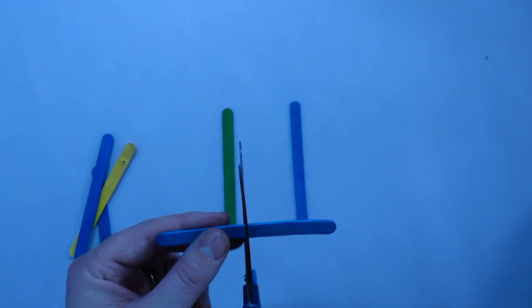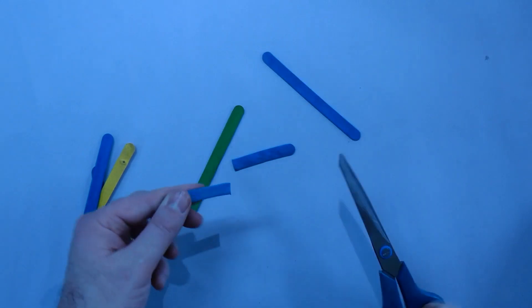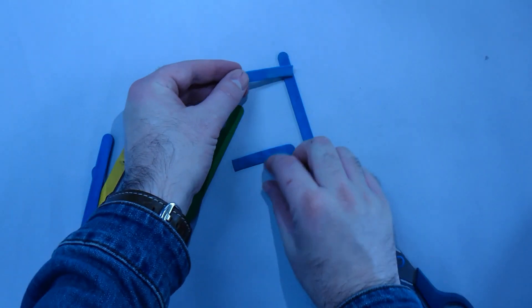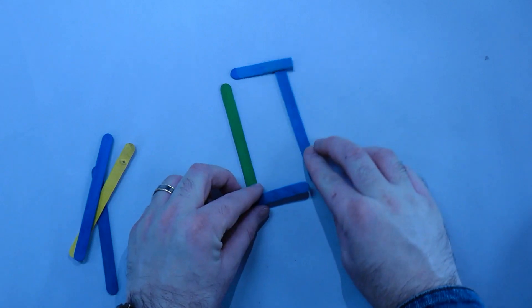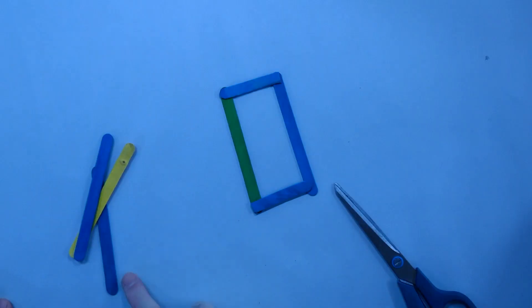What I'm going to do is make a rectangular body shape, so I'm going to cut one paddle pop stick in half or close enough, and use that for the front and the back of this body. I'm just going to glue everything together in a rectangle like this and then add some more support if I think that I need it.